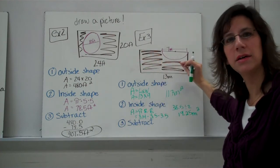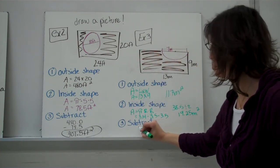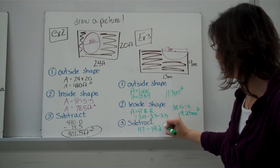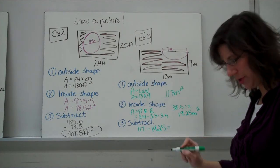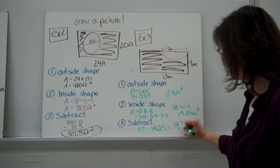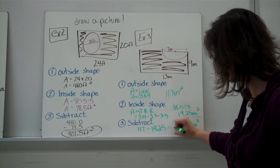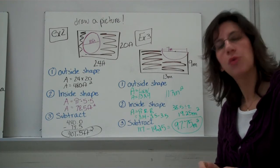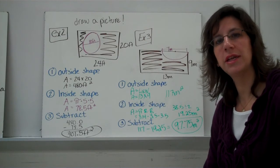So, now that we know the rectangle and the half circle, the last step is to subtract them. So, you should have subtracted 117 minus the 19.25. How much of that figure is shaded? 97.75 meters squared. That's your final answer. If you weren't successful, rewind the video and go back and try it again. Make sure that you can do it independently.